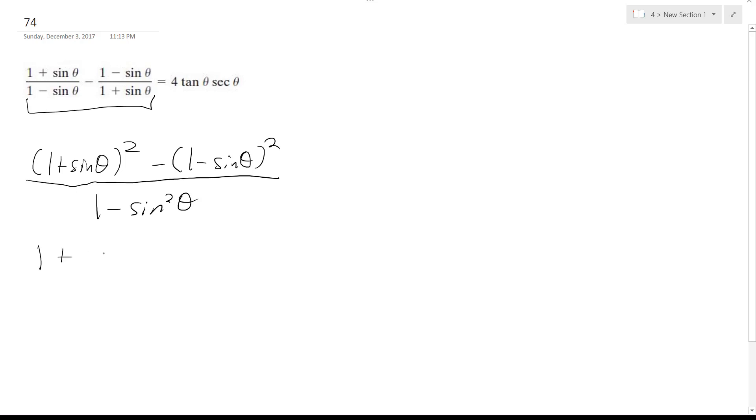So I get 1 plus 2 sine theta plus sine squared theta minus 1 plus, I have to be careful here. I'm skipping steps in my head, 2 sine theta, and then plus plus, so it becomes minus sine squared theta.